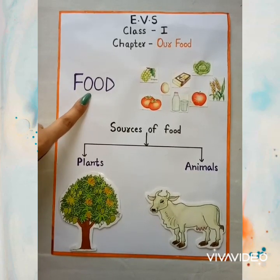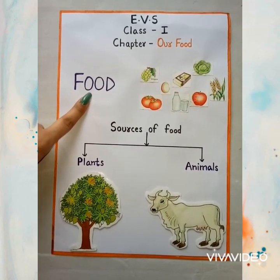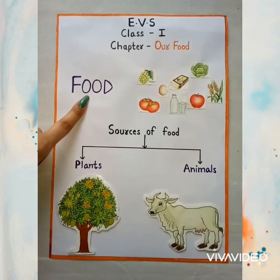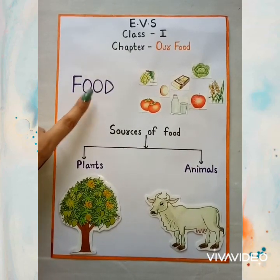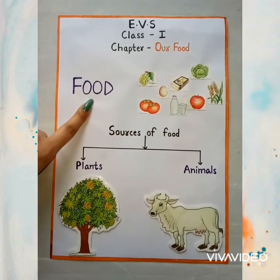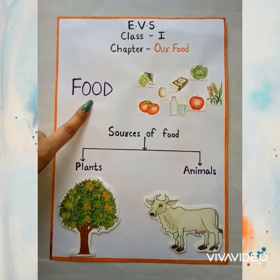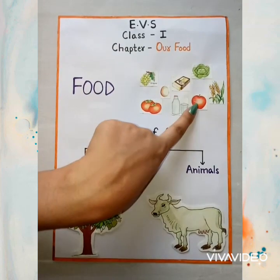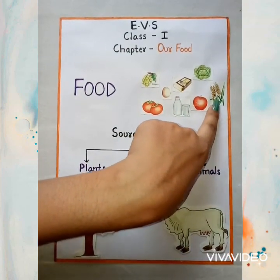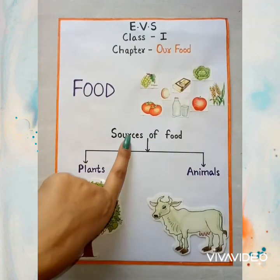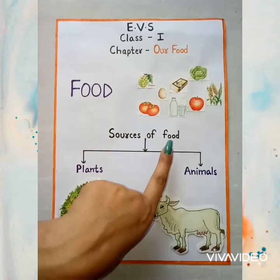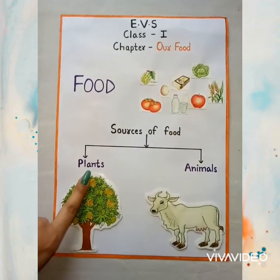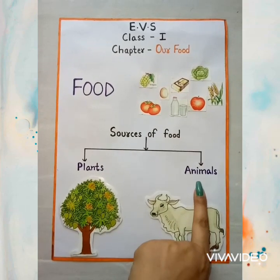Why do we need food? We need food to live and grow. We can't live without food. Food gives us energy to work and play. Food makes us healthy and strong. We eat many types of food.